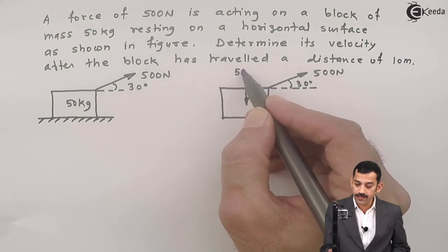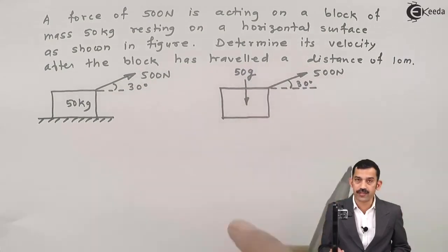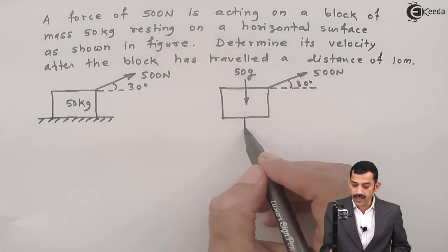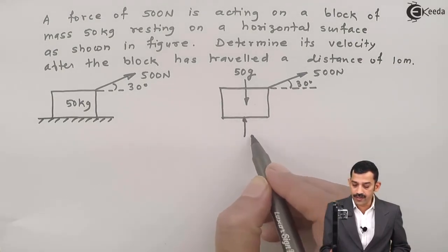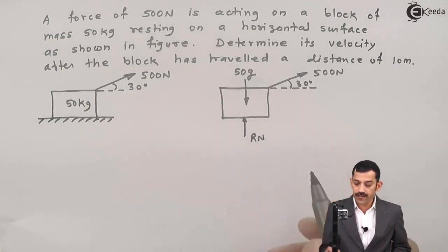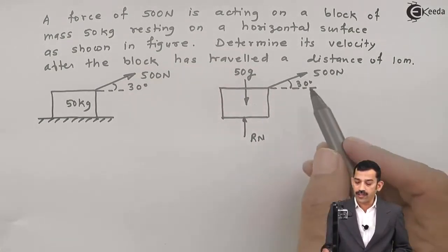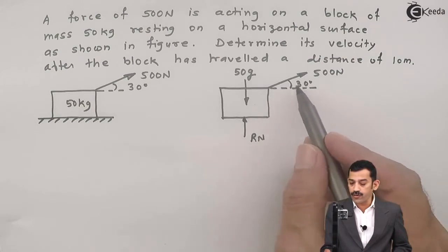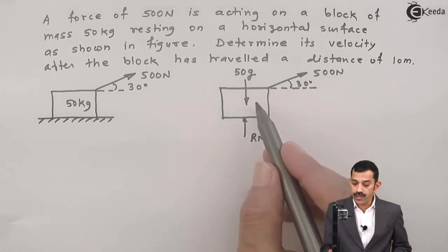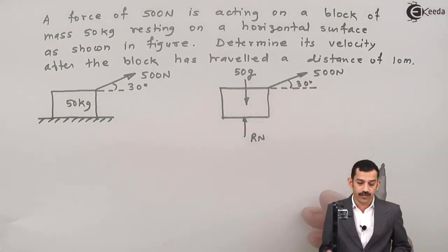Normal reaction acts in upward direction, this is RN. As 500 Newton force is acting in rightward direction, due to the horizontal component of this force, body moves in the rightward direction.